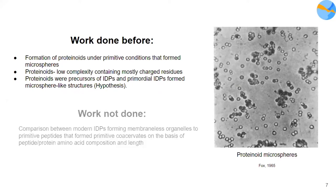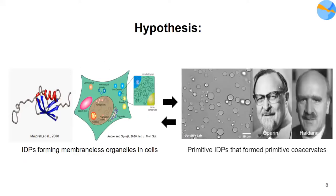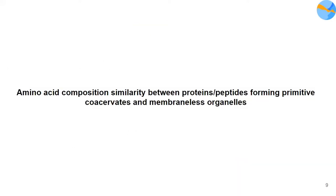It was hypothesized that proteinoids were precursors of IDPs, and that primordial IDPs formed microsphere-like droplets. But the work that has not been done is a proper comparison between modern IDPs that form membraneless organelles with primitive peptides that can form primitive precursors, on the basis of amino acid composition and length of protein. We are going to see how IDPs that form membraneless organelles in cells can be correlated with primitive IDPs that probably formed primitive precursors on early Earth, and vice versa.